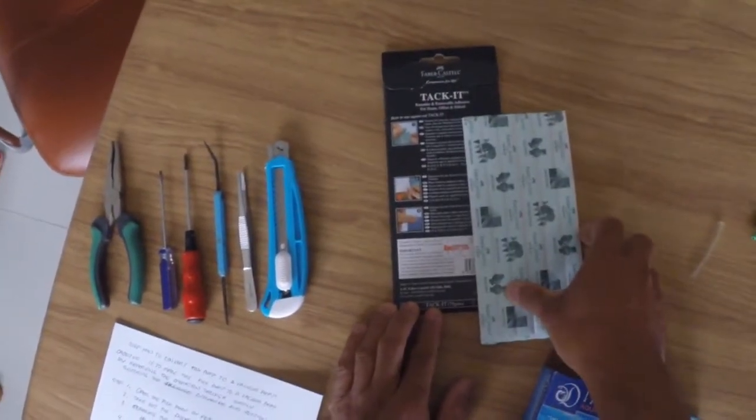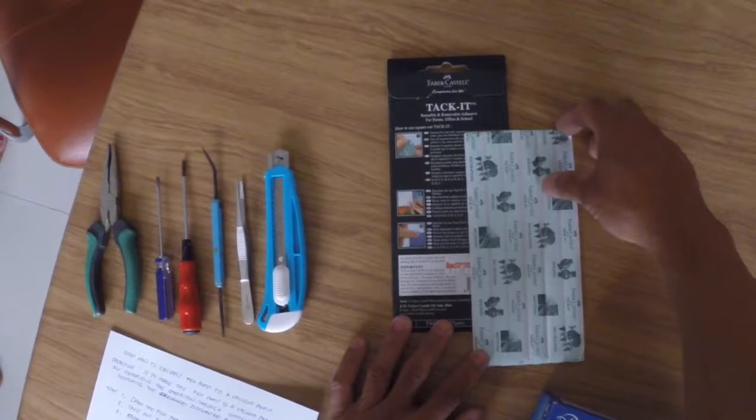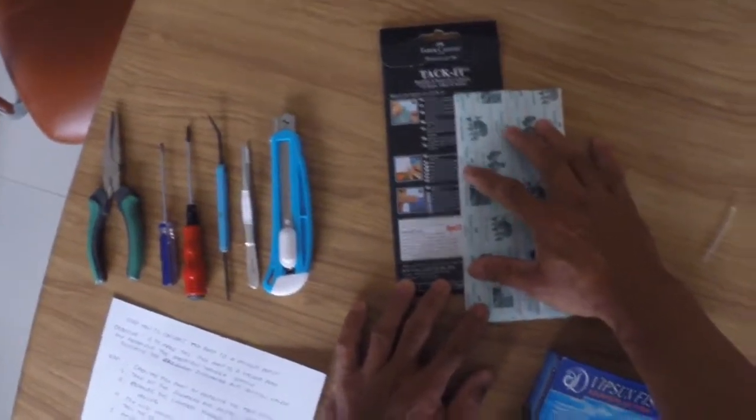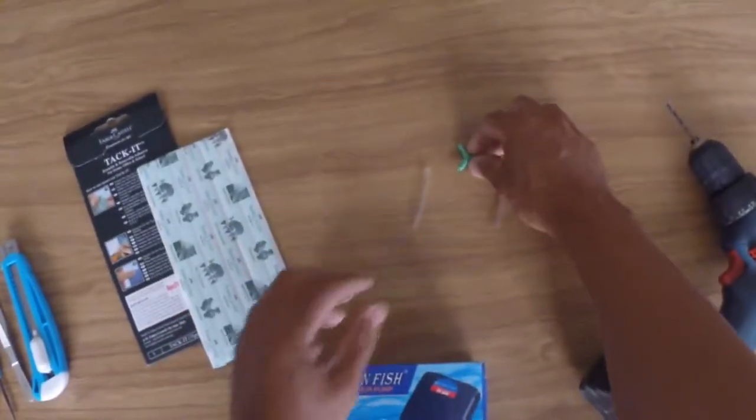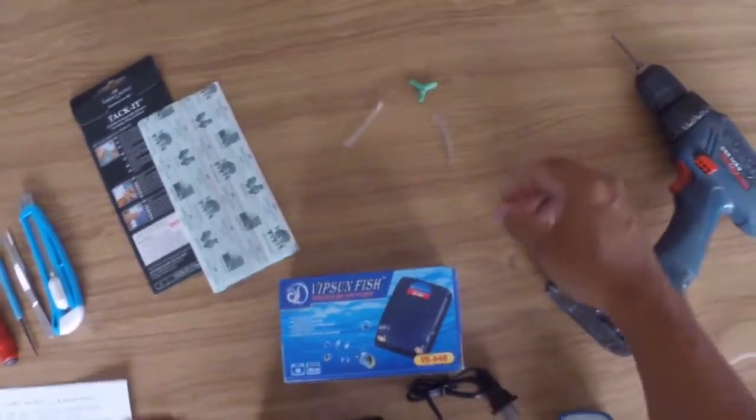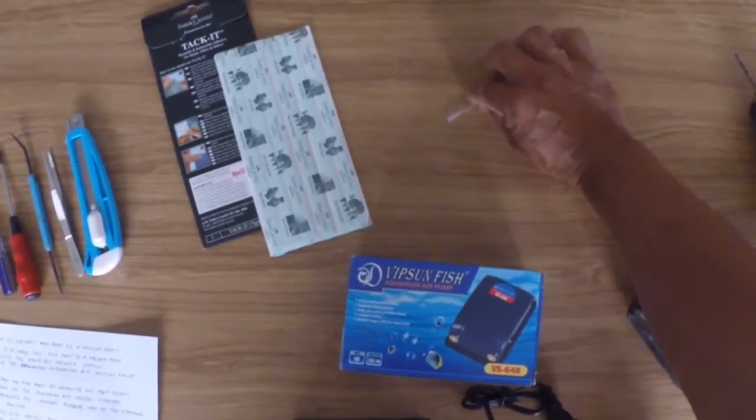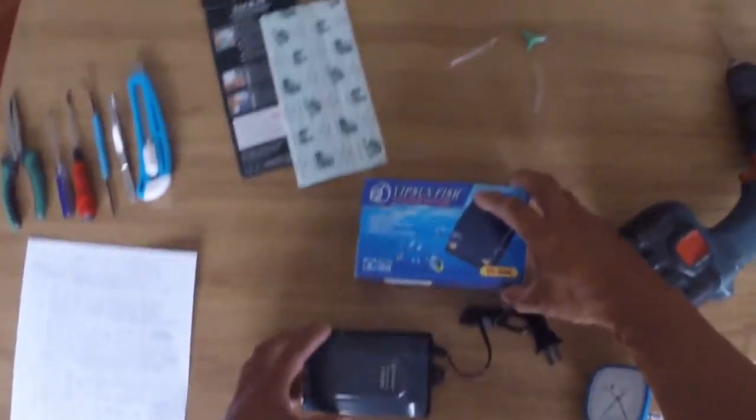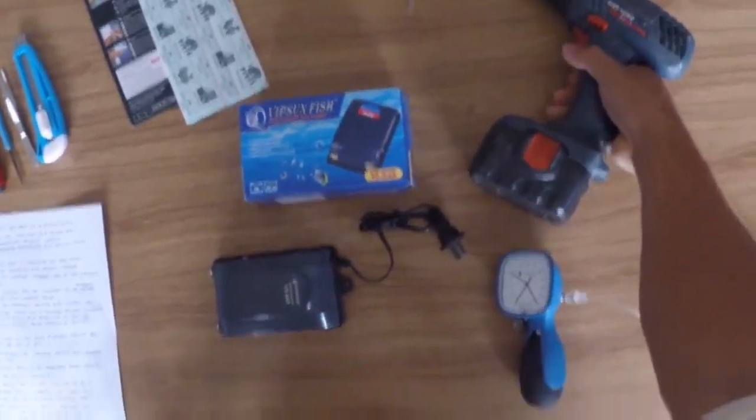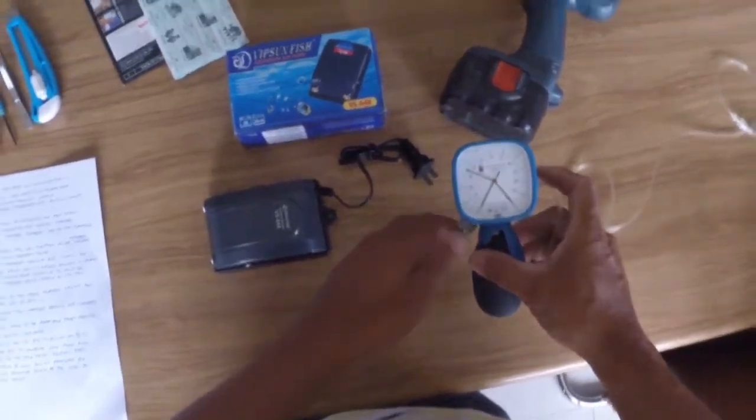This is Tuck-It, reusable and removable adhesive. You can buy it in the local bookstores. This is the white piece connectors and the two tubes. I'll show you later how we will connect this to the pumps. You need the battery drills and a tester for suction pressures.